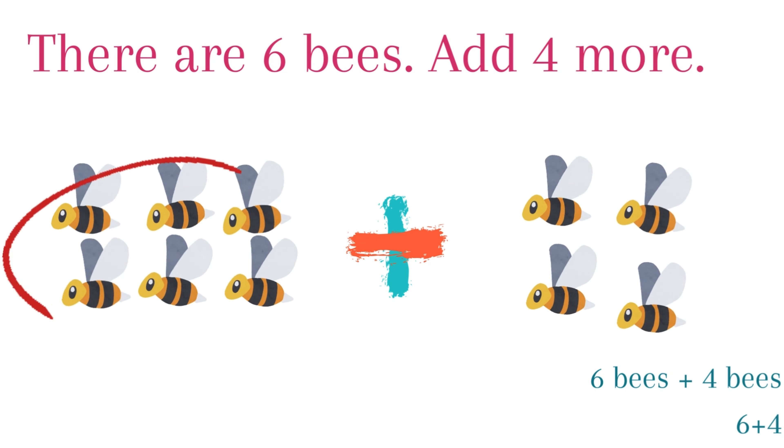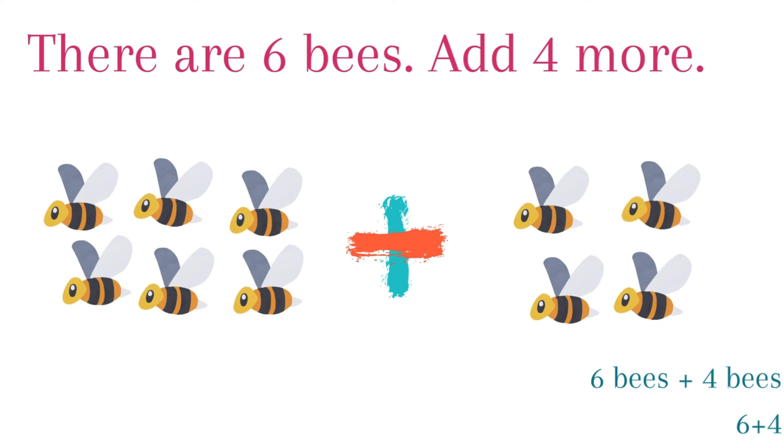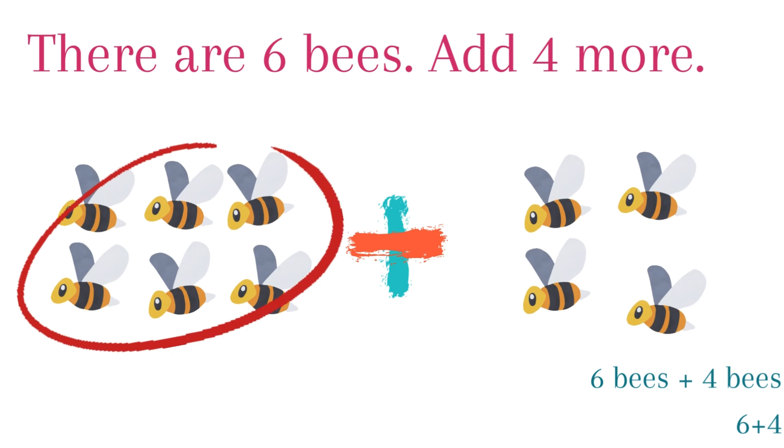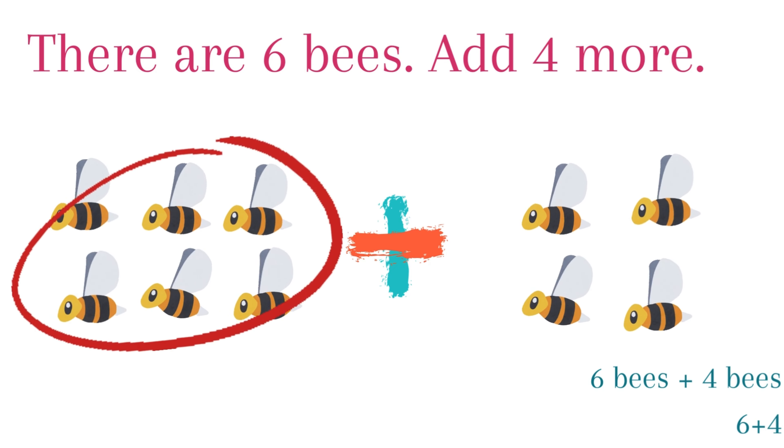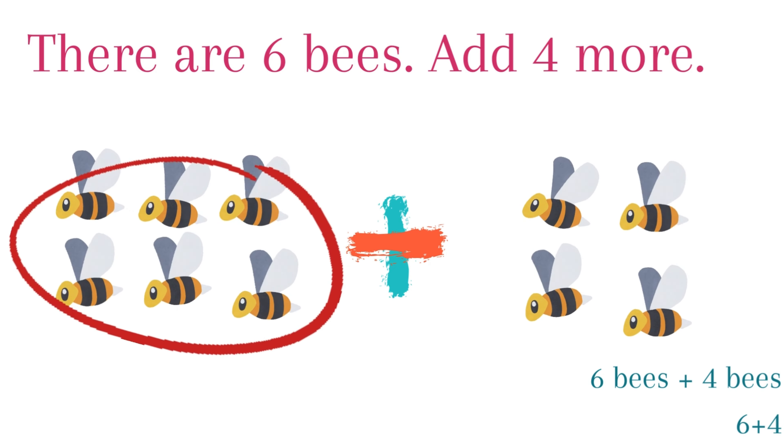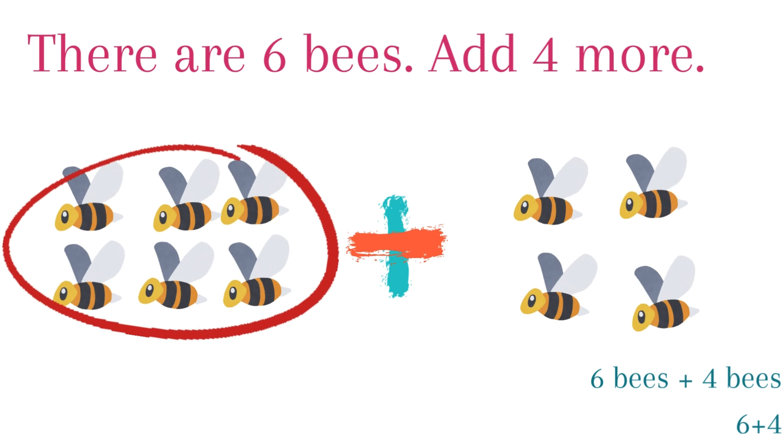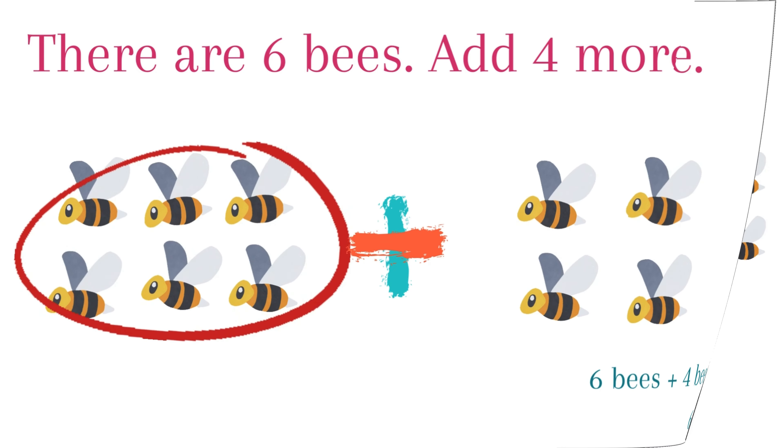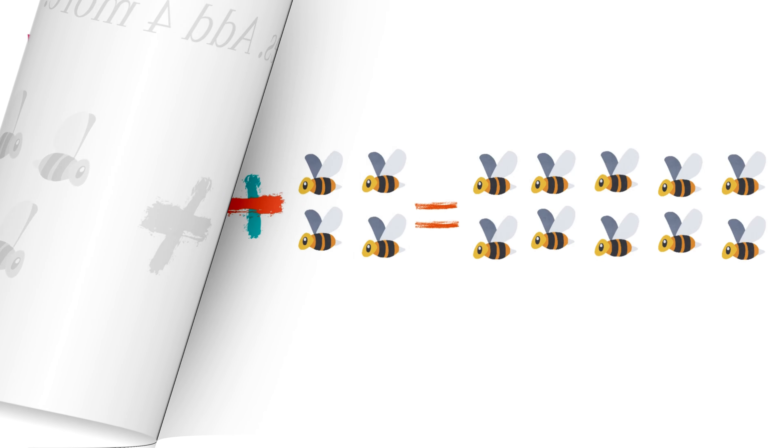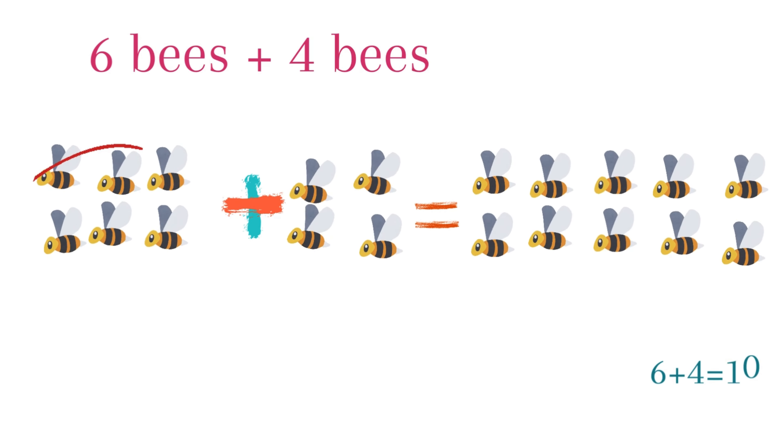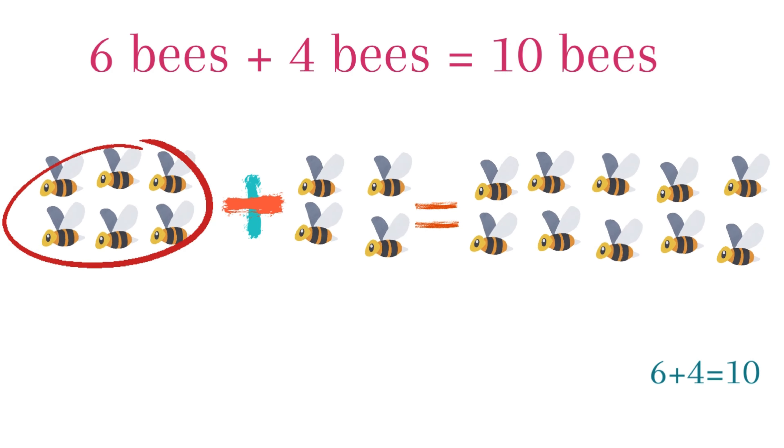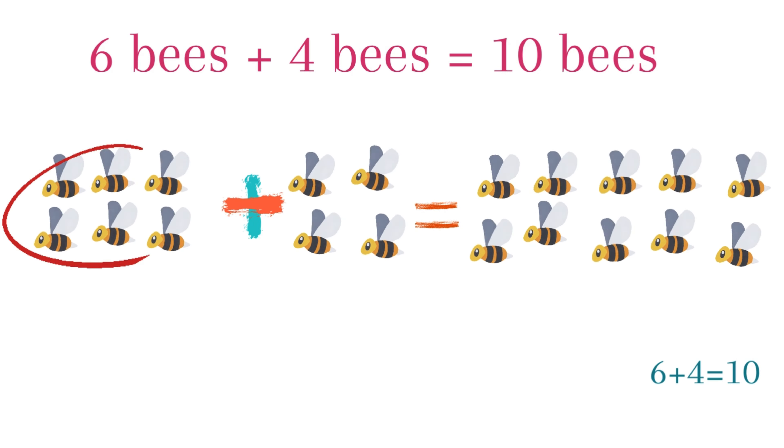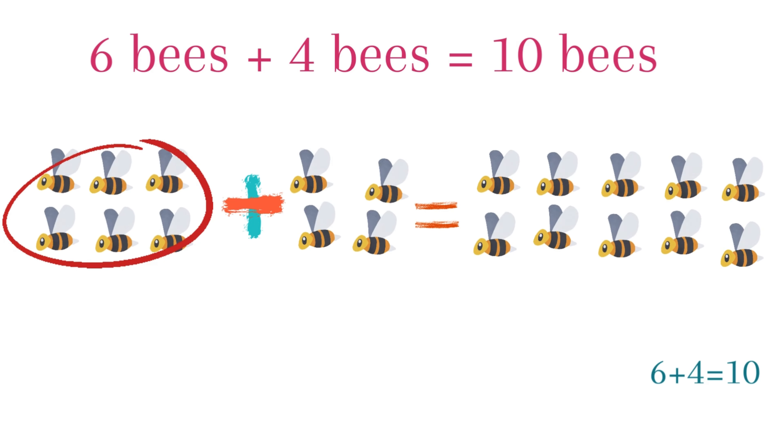There are six bees. Add four more. Six bees plus four bees. Six plus four. Six bees plus four bees equals ten bees. Six plus four equals ten.